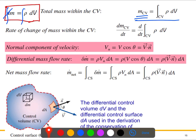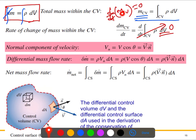There are special cases. When no mass is crossing the control volume — that is, when it is a closed system — the mass flux term is zero. In that case, d/dt of m_cv equals zero. This equation is valid whether the control volume is fixed, moving, or deforming, as long as no mass crosses the control surface.